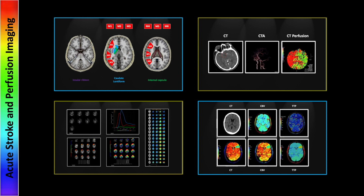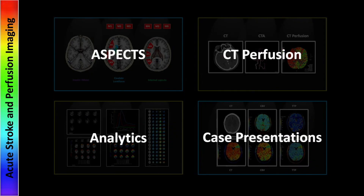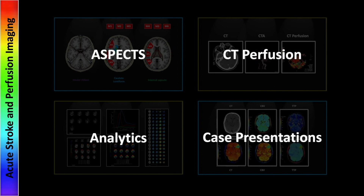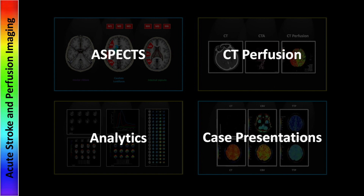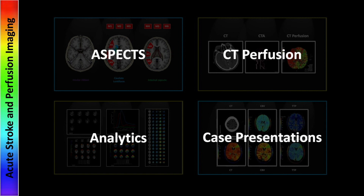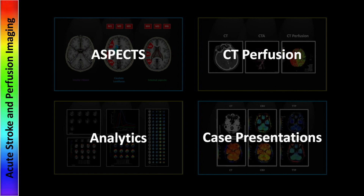This series will be in three parts. The first will be introductory and will deal with ASPECTS scoring, the actual performance of CT perfusion imaging, and the application of software analytics. The second and third portions of the series will be case presentations, with the second section being ischemic events, and the third section, the CT perfusion appearance of non-ischemic pathologies.